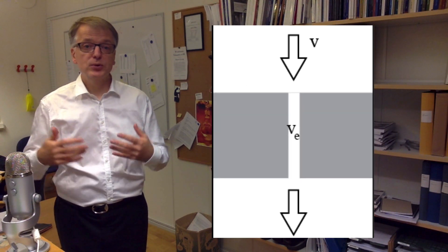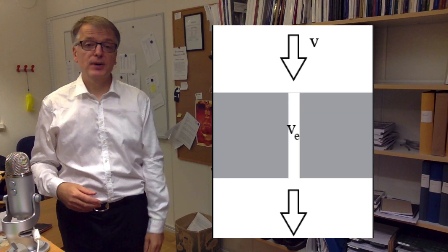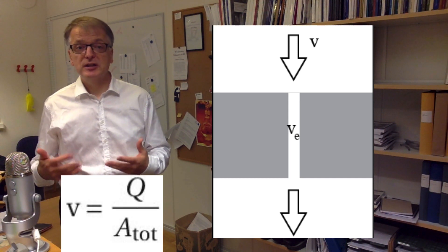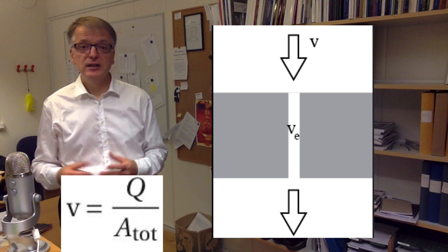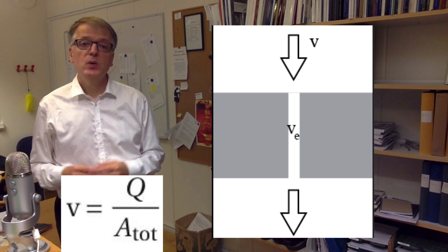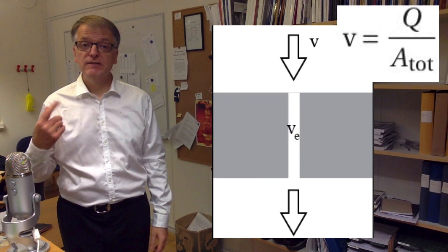We get the same result if we put in a porous medium in the pipe. If you take the volumetric flow in cubic meters per second through the flow channels in the porous medium and divide that with the total area in square meters of the porous medium, we get the superficial velocity V.